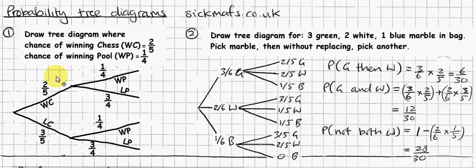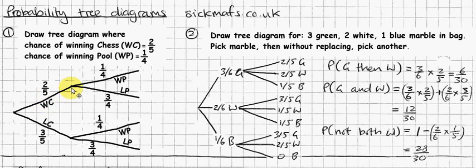Tree diagrams are supposed to show you all the different things that could happen. I could win chess then win pool, or win chess then lose pool, or lose chess then win pool, or lose chess and lose pool — those are the four different things that could happen, given that I can only win or lose a game. Once I've won chess, the chance of winning pool is a quarter, meaning the chance of losing pool is three-quarters. Whether I win or lose chess, it doesn't affect my pool gameplay in this situation, so the chance of winning or losing pool is the same on both branches.